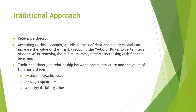There are three stages in this traditional approach. In capital structure, debt financing used in the first stage leads to increasing value. When we have an optimal capital structure, we have an increasing value — this is the optimum value. The value of the firm can increase by reducing the overall cost of capital or weighted average cost of capital up to a certain level of debt. After reaching the minimum level, it starts increasing with financial leverage.